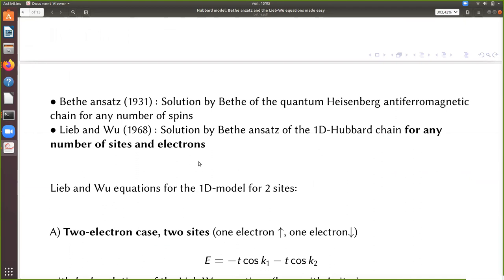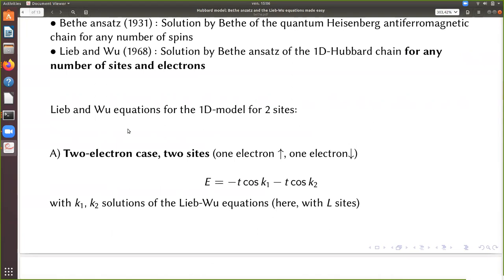What I want to say today is that there is an exact solution for this problem, for any number of sites and any number of electrons. This is called the Lieb-Wu solution of 68. And this is based on what we call the Bethe Ansatz, which has been introduced by Bethe. He found the solution for the Heisenberg antiferromagnetic chain for any number of spins. And Lieb and Wu generalize the solution when you have electrons moving instead of being fixed at each site of the chain.